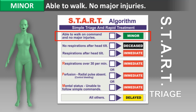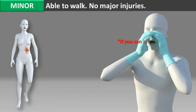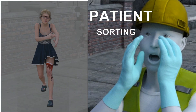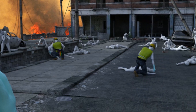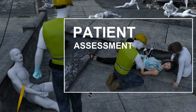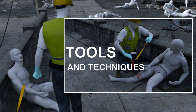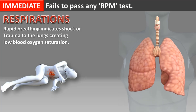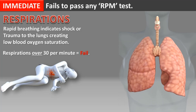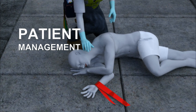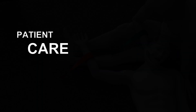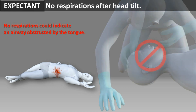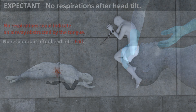After learning how to perform START triage, you will apply and test your skills on patients that come to you for help. Then you will enter the casualty area and practice your newly learned patient assessment skills. You will be instructed how to effectively utilize the tools and techniques that optimize the triage process. Graphical explanation will teach you the how and why of START triage so you can perfect your patient management skills. Proper patient care procedures will prepare you to save the greatest number of lives, as well as how to identify and manage those that cannot be saved.